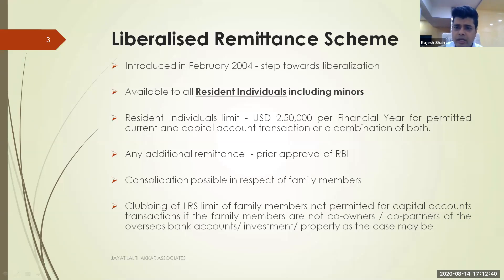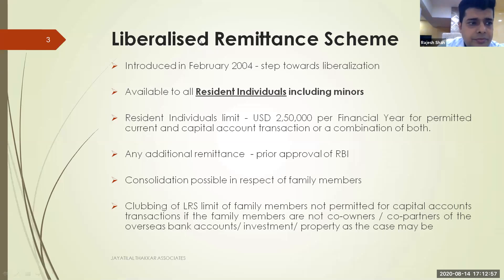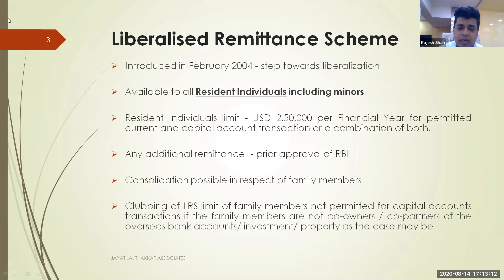If a family has four members — husband, wife, and two children — they can collectively send one million dollars abroad. This money can be sent to a bank account abroad or invested in shares, securities, bank accounts, bonds, or various other places. Purchasing property abroad and giving gifts are also permissible uses.